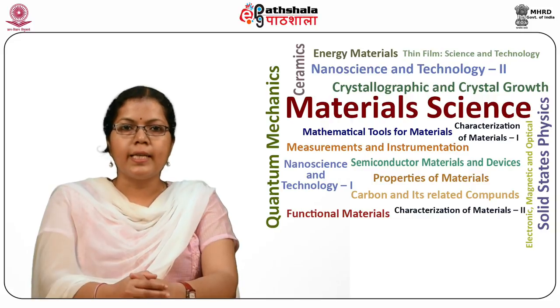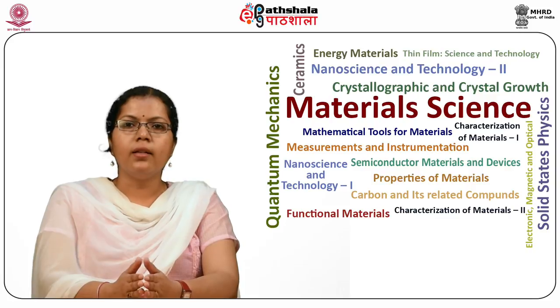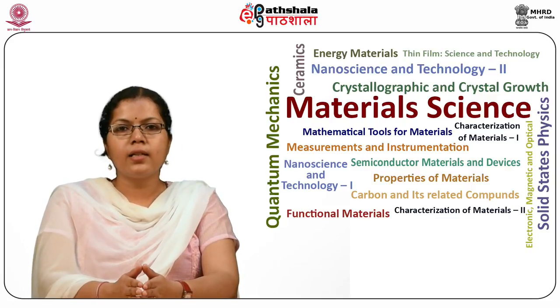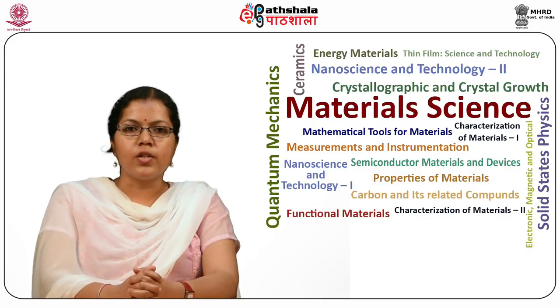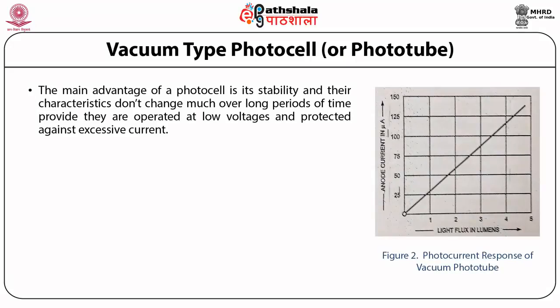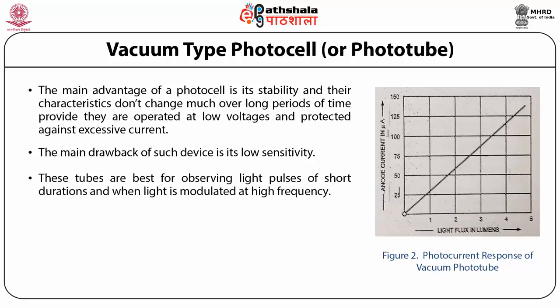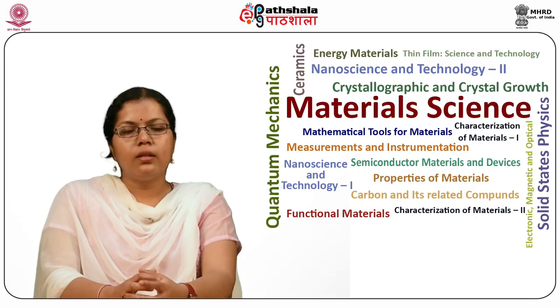The photocurrent response of vacuum phototubes is linear over a wide range, so much so that they are often used as standards in light comparison measurements. The main advantage of a photocell is its stability — characteristics don't change much over long periods of time, provided they are operated at low voltages and protected against excessive current. The main drawback is its low sensitivity. These tubes are best for observing light pulses of short durations and when light is modulated at high frequency.